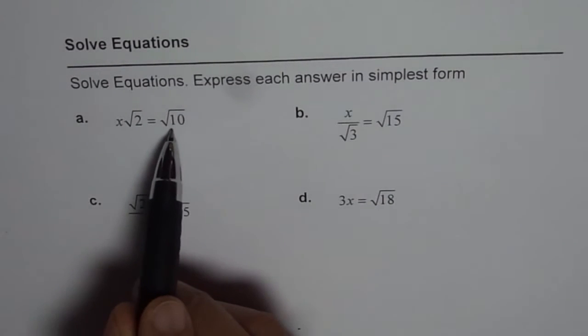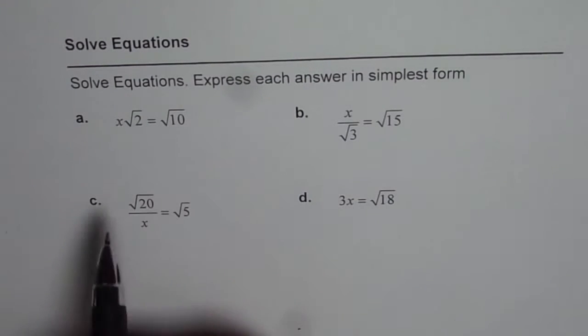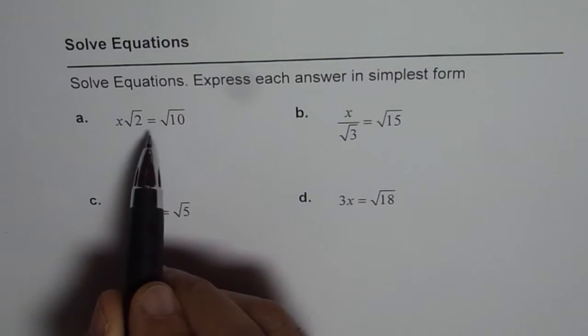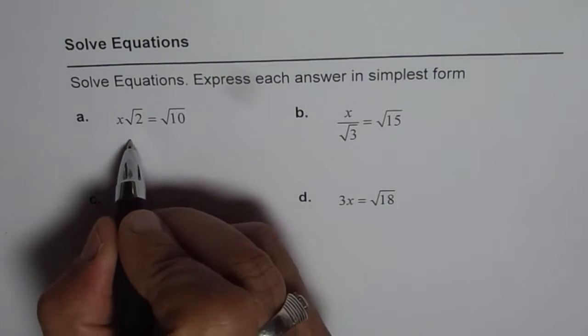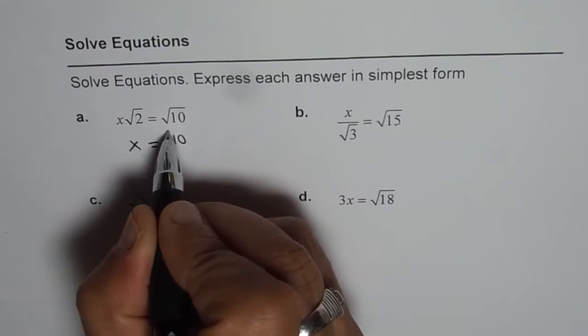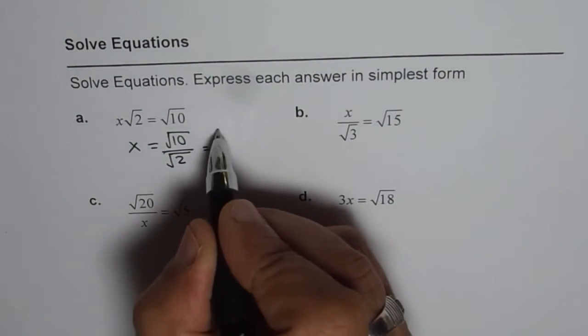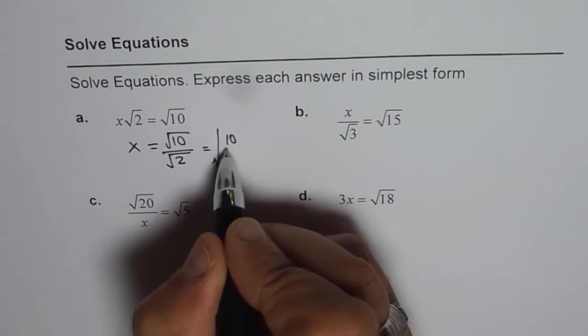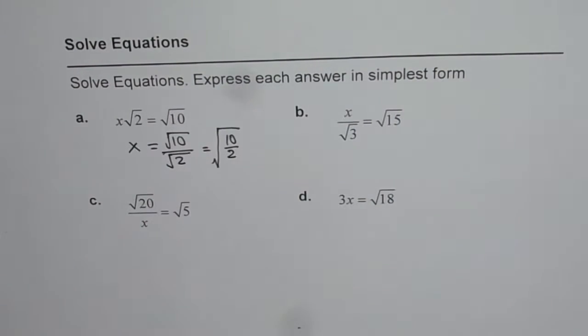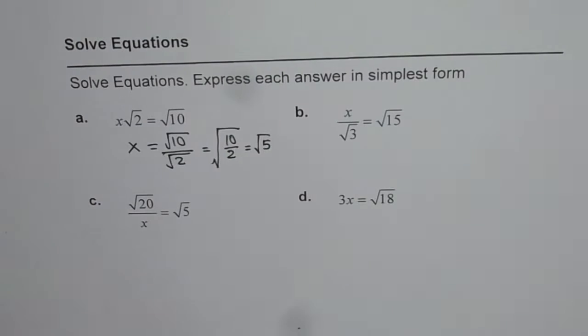Now, to find x from A, which is x√2 = √10, we need to divide both sides by √2. Then what do you get? You get x = √10/√2. This is as good as dividing 10 by 2 within square root. And what you get is √5 and that becomes your answer.